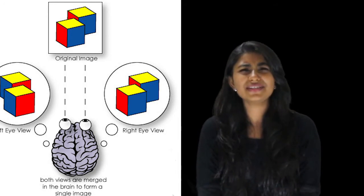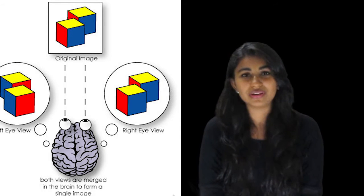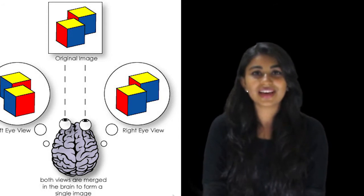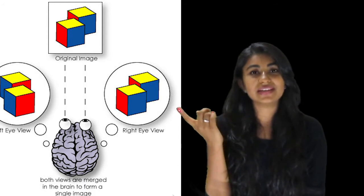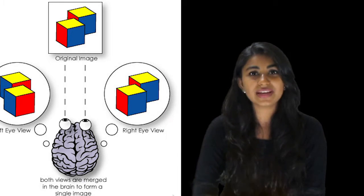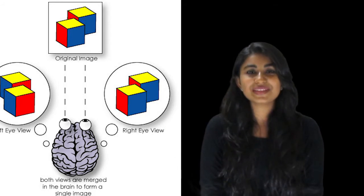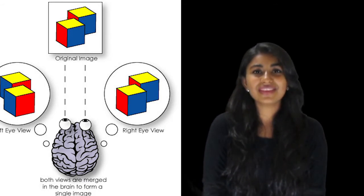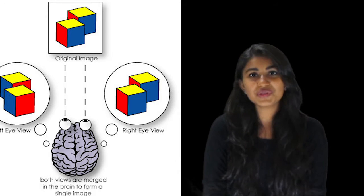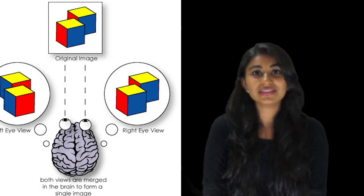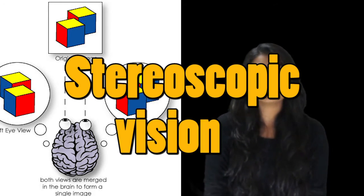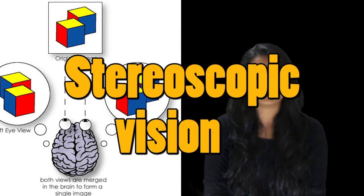Our eyes each have a slightly different view of the world. Our left eye sees more of the left side, whereas our right eye sees more towards the right side. Your brain then fuses the images together, and thus it allows you to see the 3D world. This effect is known as stereoscopic vision, and we'll talk on it some other day.